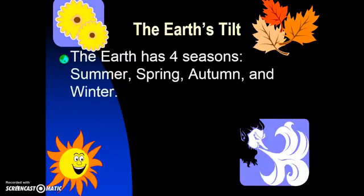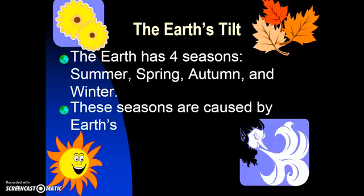The Earth has four seasons: summer, spring, autumn, and winter. And these seasons are actually caused by Earth's tilt.